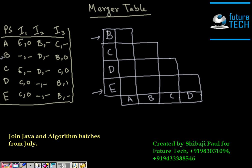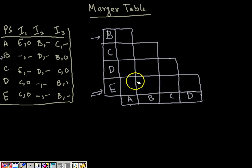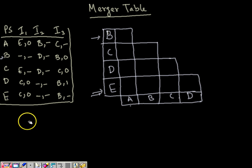To develop a merger table, start from the second state row-wise — from B to E row-wise — and from the first state to the second-last state column-wise. We develop the merger table this way to avoid listing the same pair twice. So if there is a state pair AB, we are not going to have the same pair again as BA. Also, pairs like AA or BB should not appear.